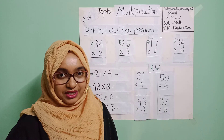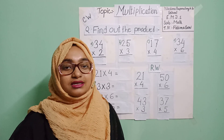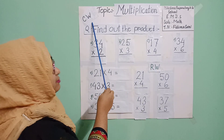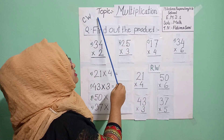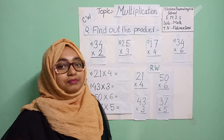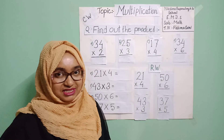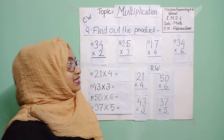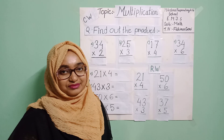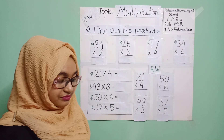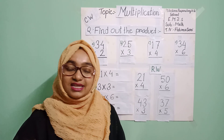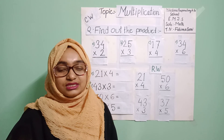Students, first take out your CW copy and then write 'CW' in the middle of your copy. Write the topic name: Multiplication. Please don't do any spelling mistake. Okay students, then write the question: 'Find out the product.'